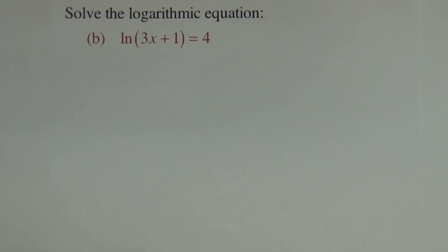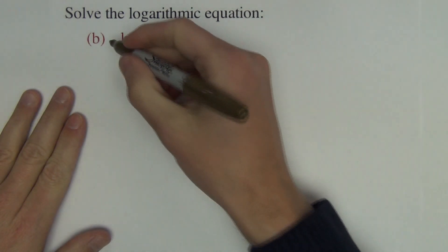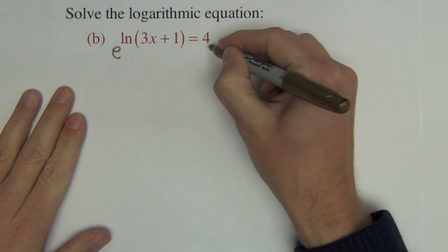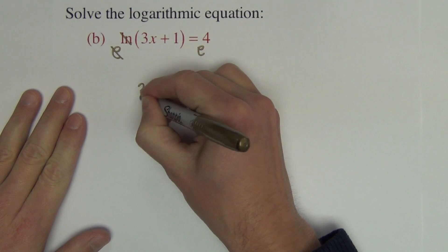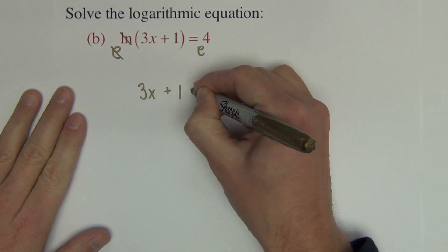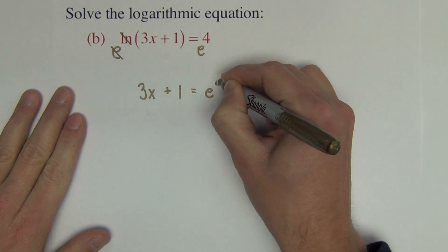Alright, this next problem, the logarithm is a natural log. The rules still apply. We get the logarithm by itself first, which it is. So I'm going to raise a natural log up above an e. That cancels. Giving us 3x plus 1 equals e to the 4th.